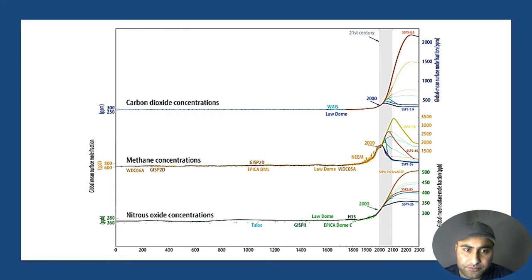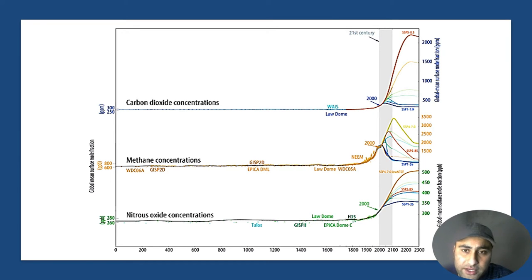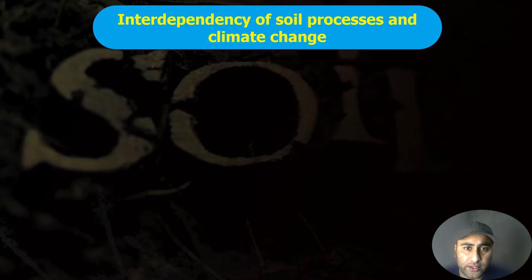From historical data we see a steady line in CO2 concentration up to the industrial era, which has since drastically increased. In the 21st century, it has been predicted that CO2 will continue to increase if we go by the current rate of development and fossil fuel burning. This raises the question: what does climate change have to do with soil processes?